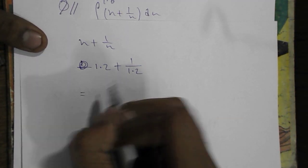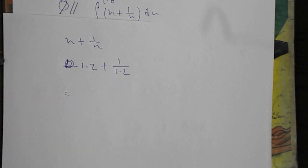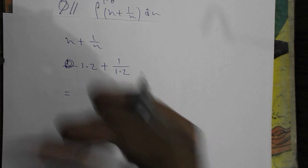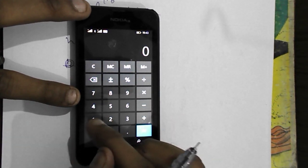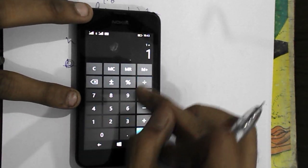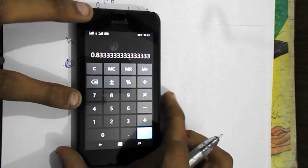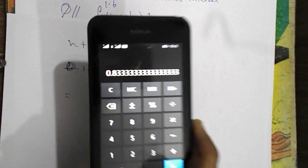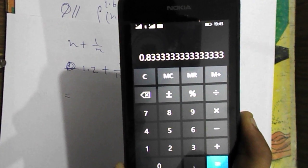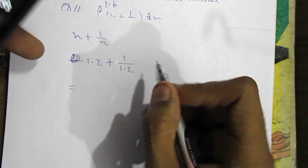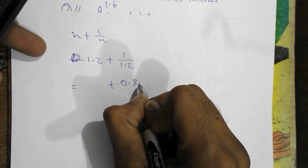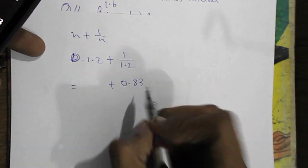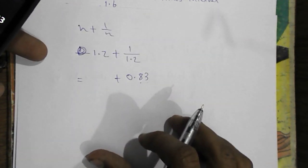We will replace the value of x with 1.2 plus 1 by 1.2. Now 1 by 1.2 is equal to 0.833 lots of threes. We will take 83.